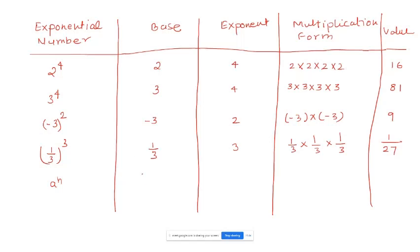For A to the power of 10: base is A, exponent is 10. The multiplication form is A times A times A... times A — we don't know exactly how many since it's a variable, so we write A times A times dot dot dot times A.